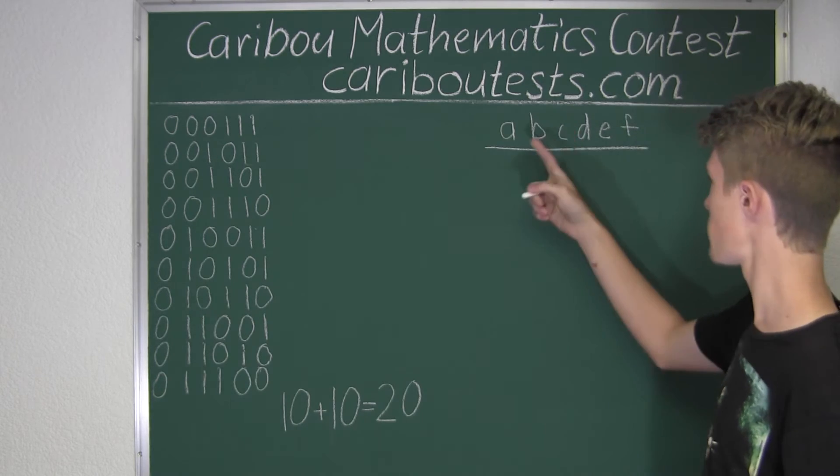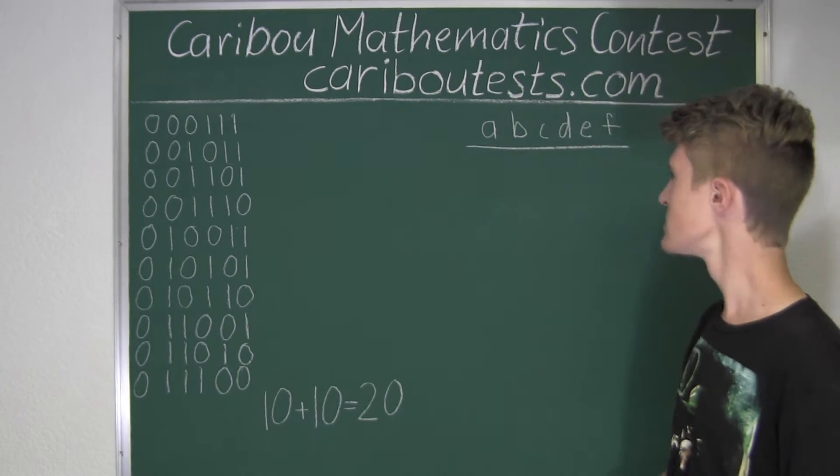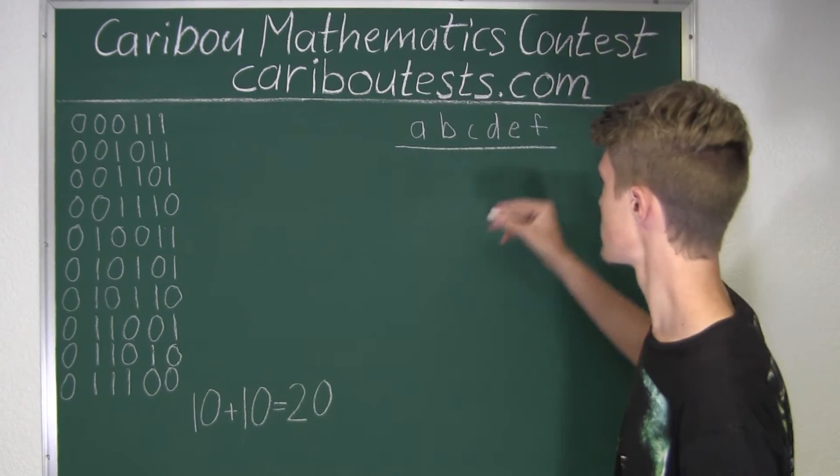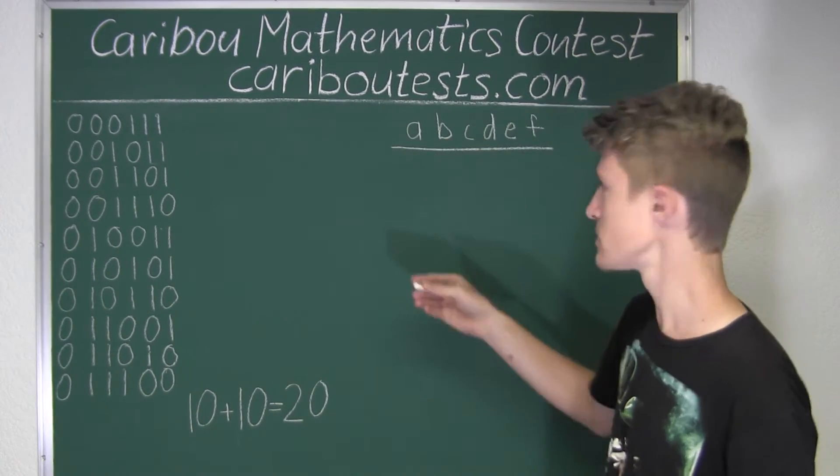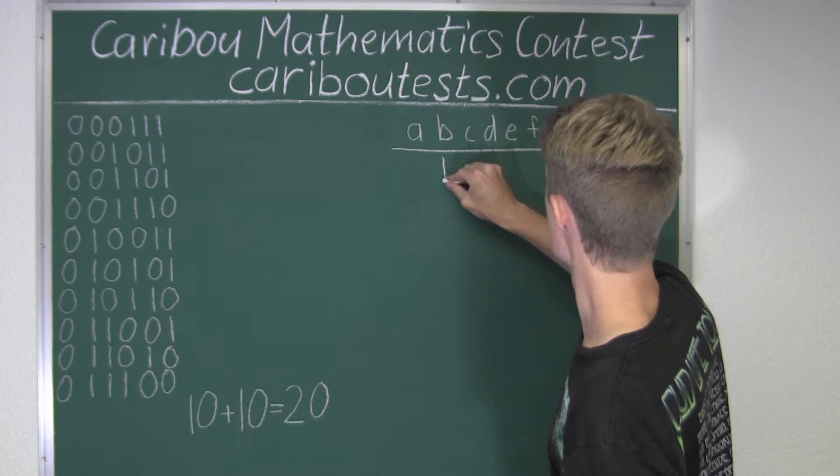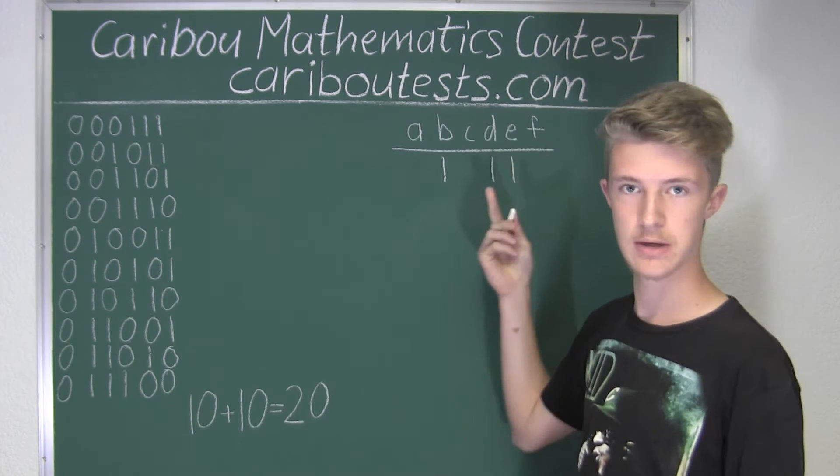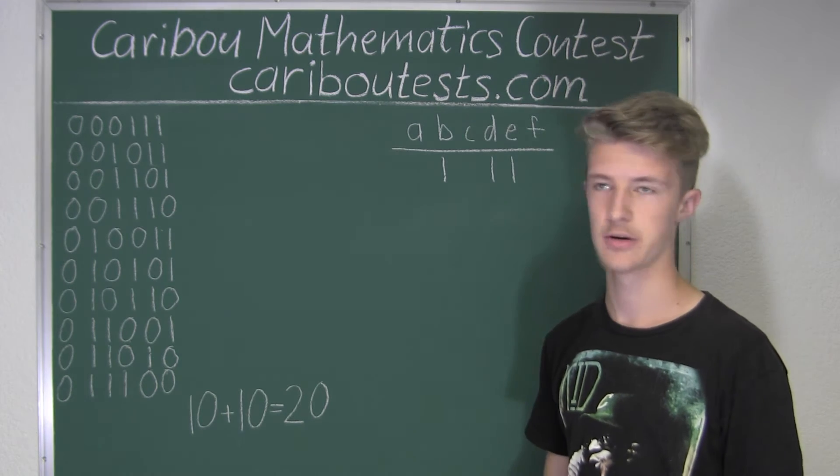And now we had to choose three out of those six letters. So let's say we chose B, D, and E. And now we would write a 1 under those letters. And now for the ones that we didn't pick, we would just write a 0 under them.